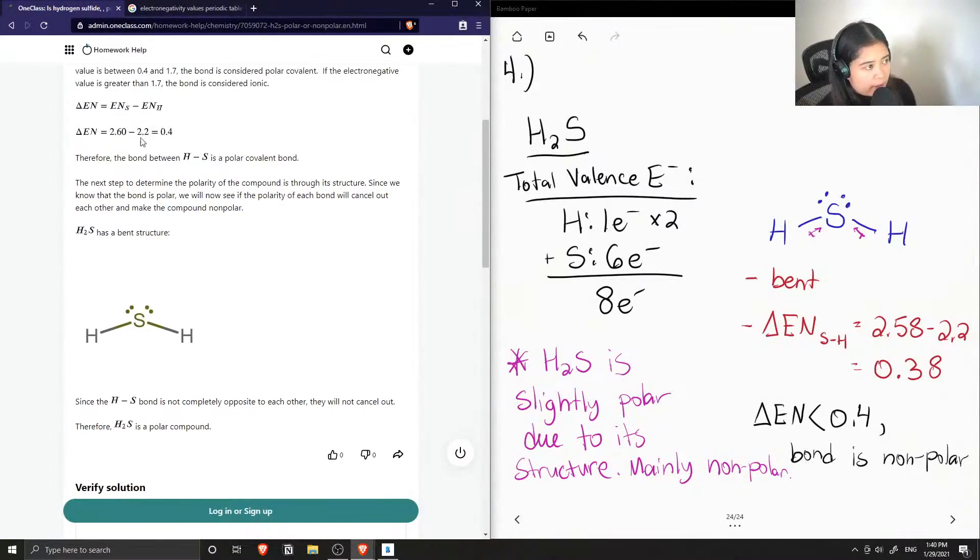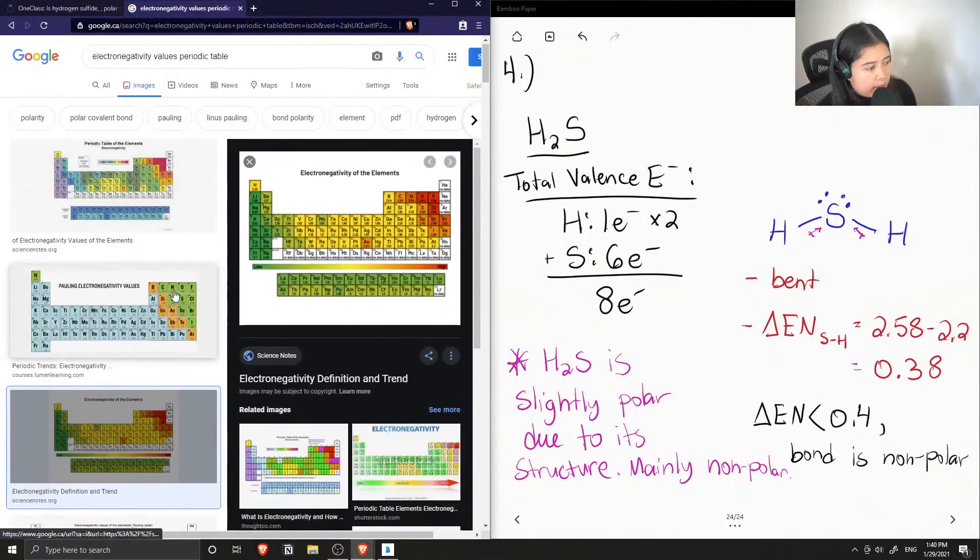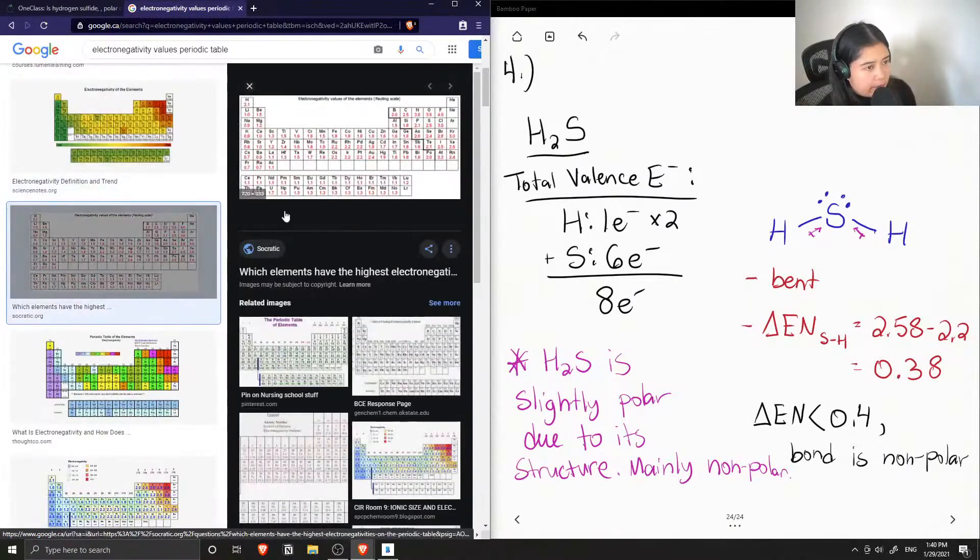So they calculated their value to be 0.4. A lot of different references have various electronegativity values. You can see that for theirs they got 2.6 for their sulfur instead of the 2.58. So if we looked at a different table that rounds, you'll see that it's 2.5 here.